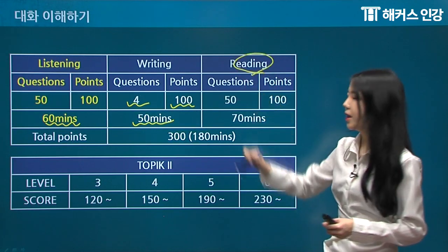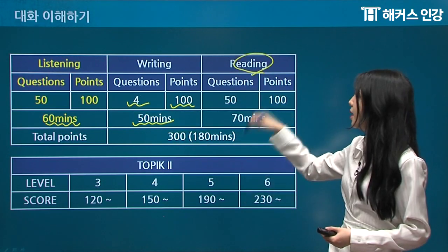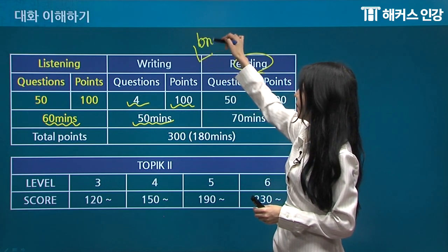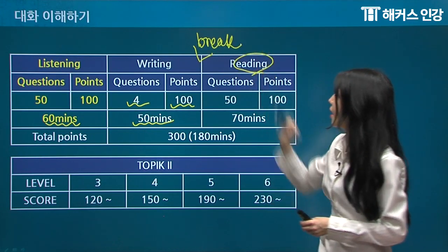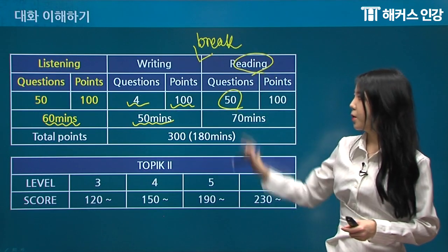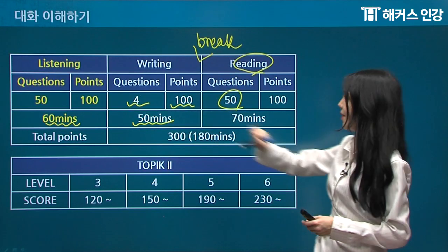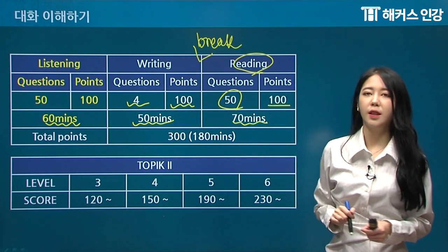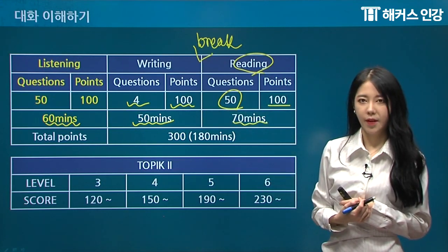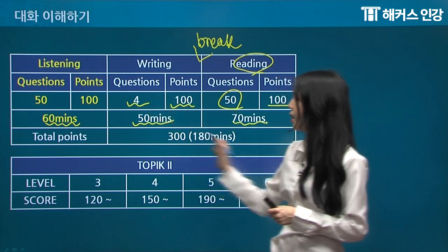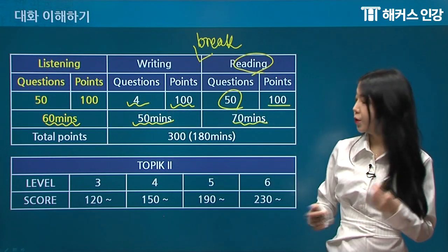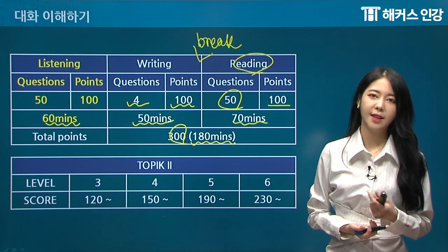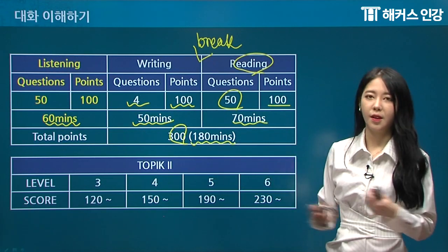For reading, since you can do it by yourself, it's going to be in a separate part, so you'll have a little break in between. Reading will give you 50 questions, just like listening, 100 points just like everything else, but 70 minutes — 10 more minutes than listening. So the total points would be 300, adding up to about 180 minutes total for you to solve these problems.